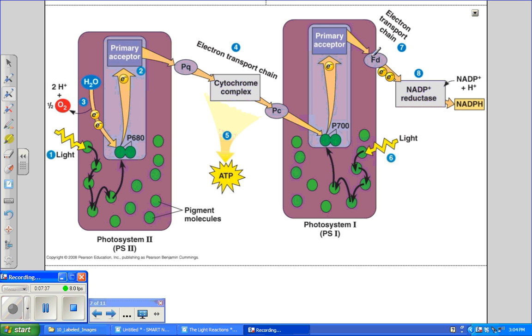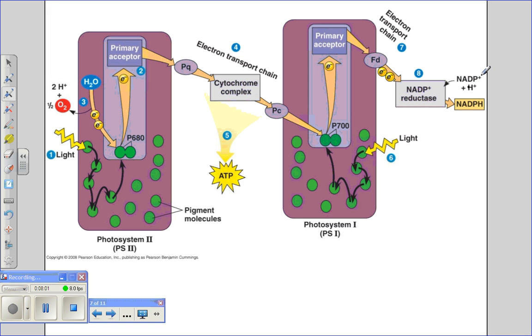That electron is picked up by ferredoxin, which constitutes the electron transport chain of Photosystem I. And the enzyme NADP plus reductase is going to catalyze the transfer of these electrons to NADPH. So we've got our positively charged proton. It's going to pick up an electron and be transferred as a hydrogen ion to NADP plus forming NADPH, which is our second product of the light reactions.